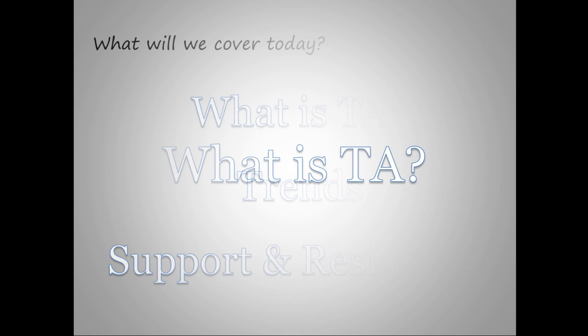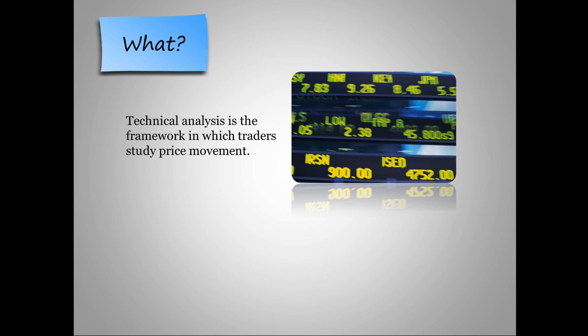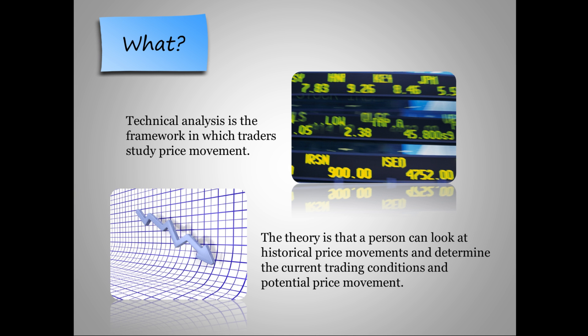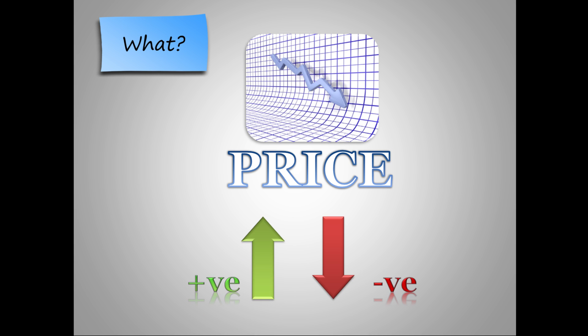Some of you might wonder: what exactly is technical analysis, and can I do it? Technical analysis is a framework in which traders study price movement. The theory is that a person can look at historical price movement and determine the current trading conditions and potential price movement. The main evidence for using technical analysis is that theoretically, all current market information is reflected in price. So if price reflects all the information that is out there, then price action is all one really needs to make a trade. Technical analysts look for similar patterns that have formed in the past and will form trade ideas, believing that price will act the same way that it did before.